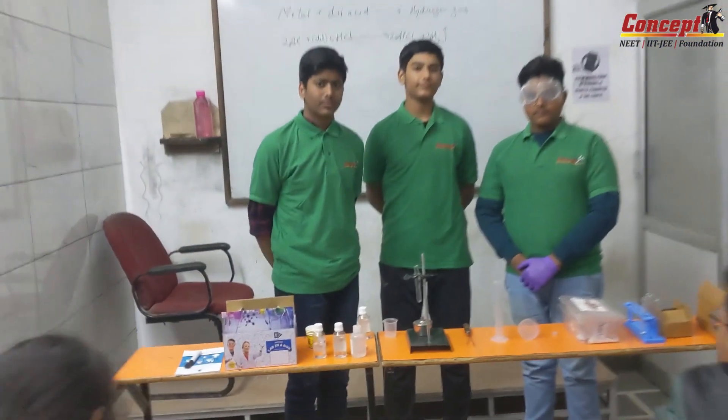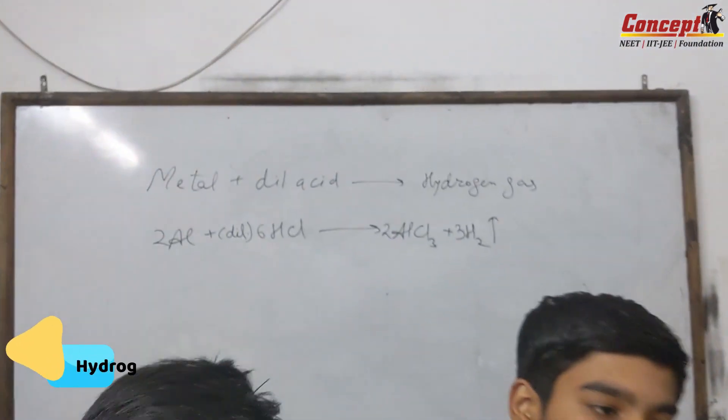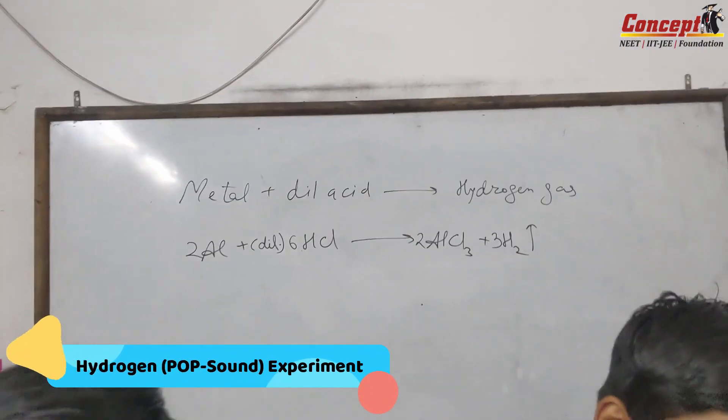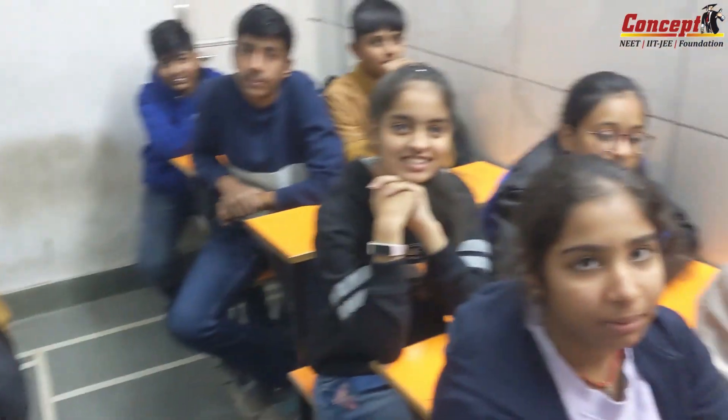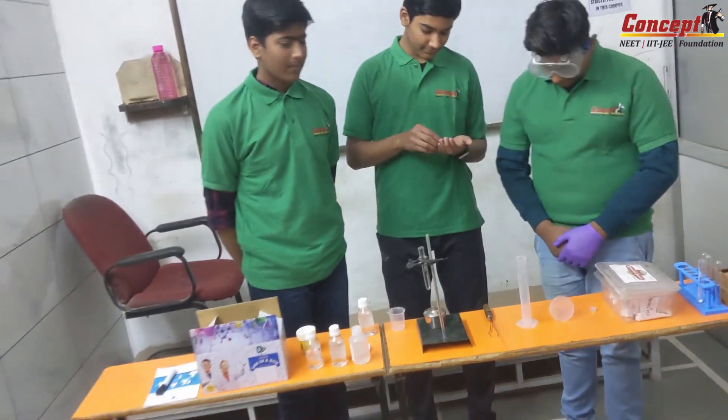In today's experiment we are trying to see what happens if we react metal with dilute HCl — what happens if we react aluminium with dilute HCl, which gas will be involved. All of you must know, right? So start the experiment guys, take some aluminium foil.